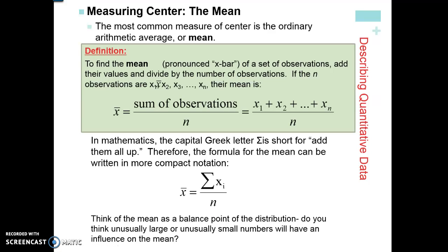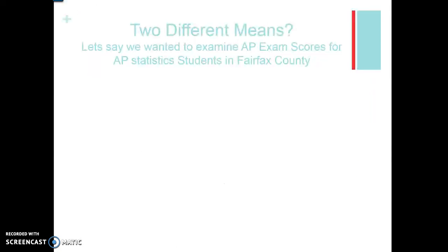Think of the mean as a balance point of your distribution. The mean can be affected by unusually large or unusually small numbers — it's going to pull the mean towards the higher or lower values. Think of your mean like a scale: it's going to balance your values. Where would you have to put the mean so that your scale is balanced?